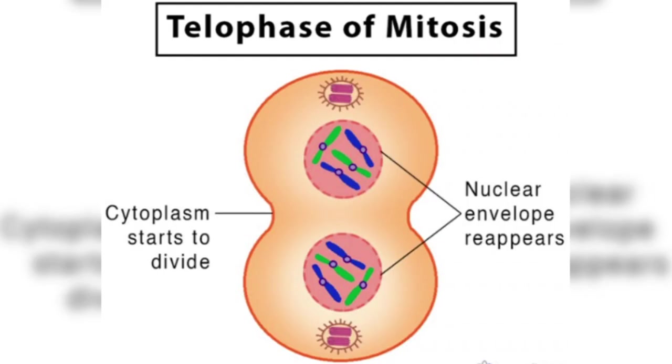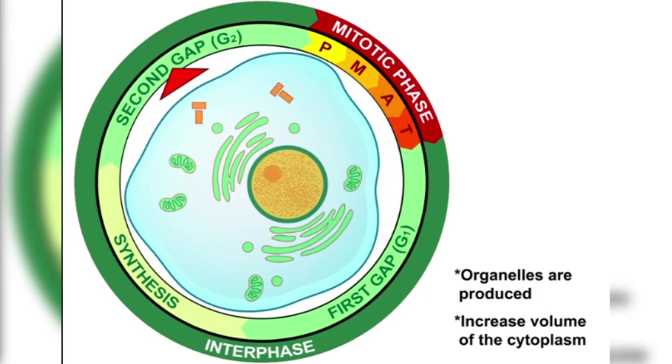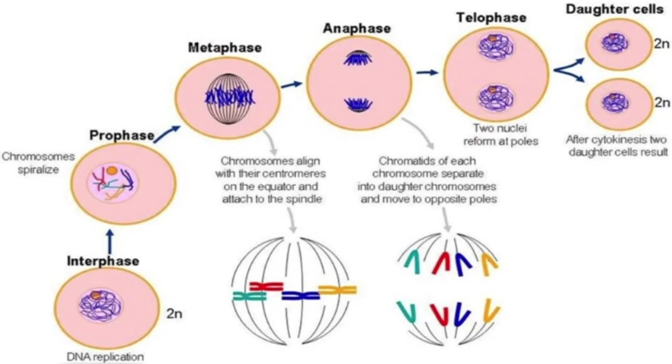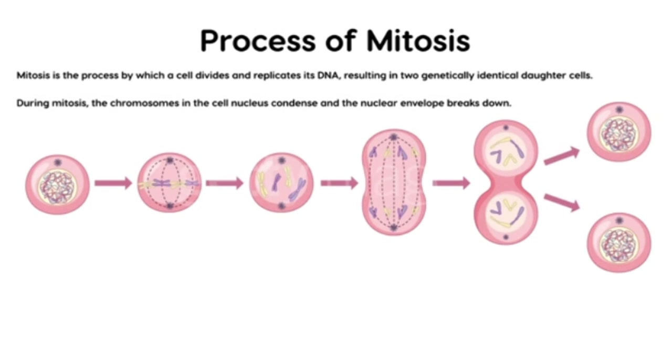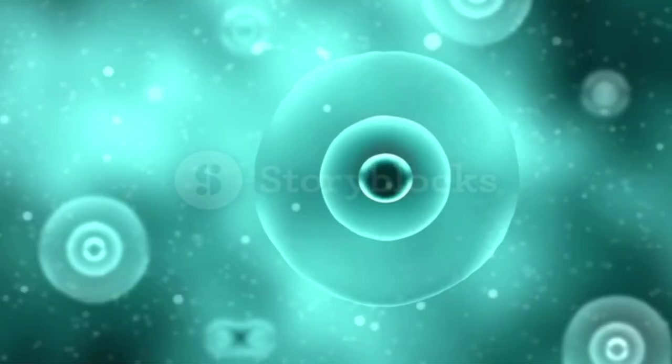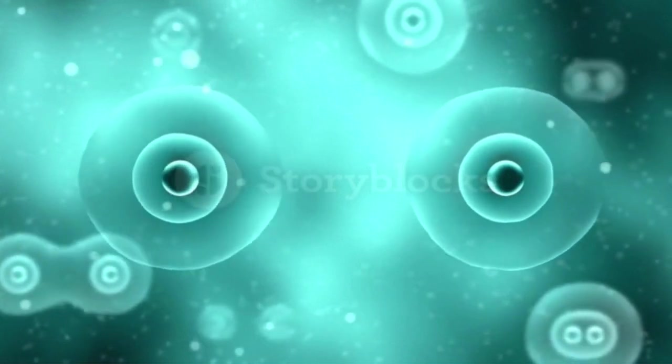Interphase. It is the phase between two successive M-Phases, also known as intermitotic phase. It is also called the resting phase, though no visible changes occur. Metabolically active phase or energy-utilizing phase, in which the cell prepares itself for next cell division by a number of biosynthetic activities, so called preparatory phase.